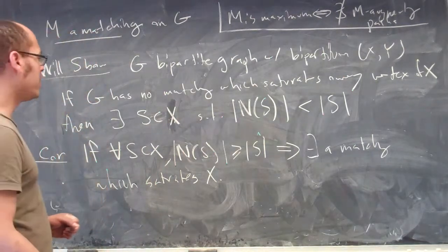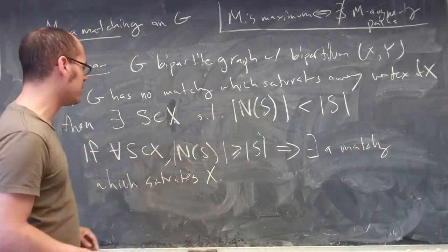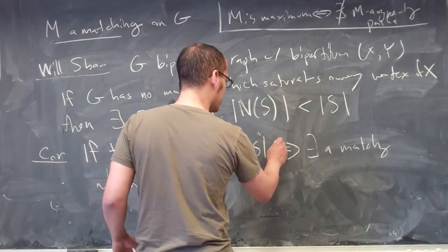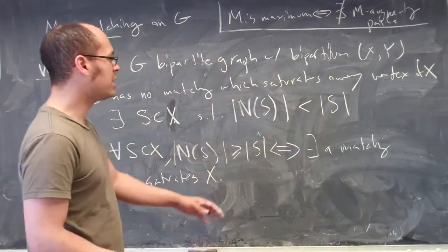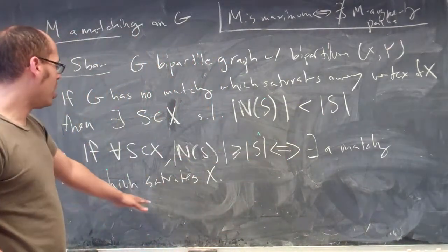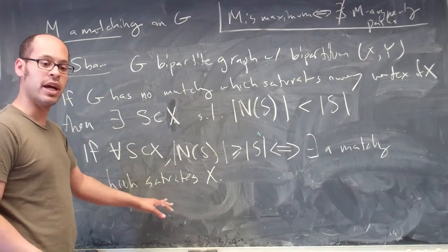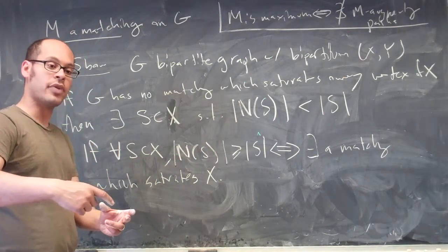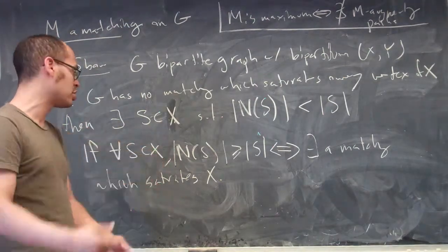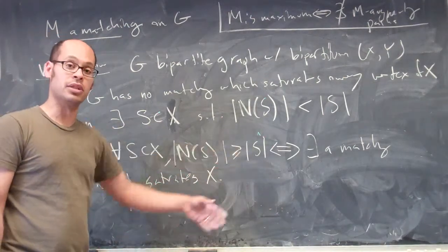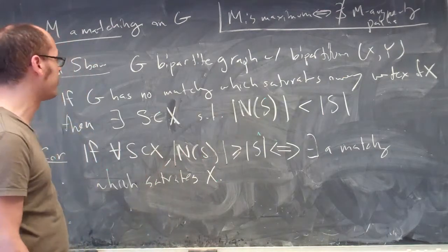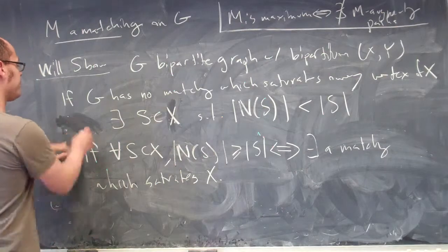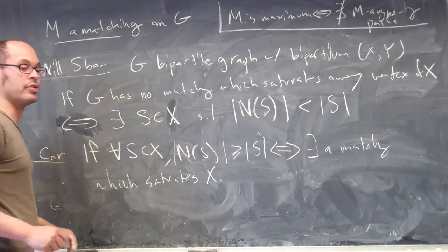The converse is actually simpler. If there is a matching which saturates everything in X, then for every subset of X I can look at the corresponding matched vertices, which are in the neighborhood, and there are at least as many of them as there are in the set. So this is actually an if and only if — but the interesting direction is the one originally stated.